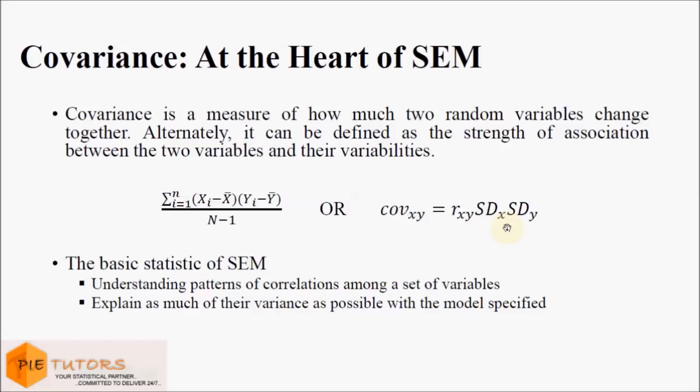Once the model's parameters have been estimated, the resulting model-implied covariance matrix can then be compared to an empirical or data-based covariance matrix. If the two matrices are consistent with one another, then the structural equation model can be considered as a plausible explanation for relations between the measures.